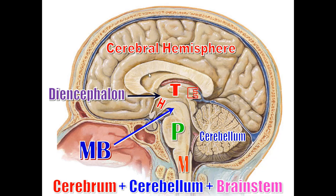The ventricular system is formed of the lateral ventricle in the cerebral hemisphere, the third ventricle in the diencephalon — which communicates with the lateral ventricle via the foramen of Monroe — and the fourth ventricle in the hindbrain, which communicates with the third ventricle via the aqueduct of Sylvius.